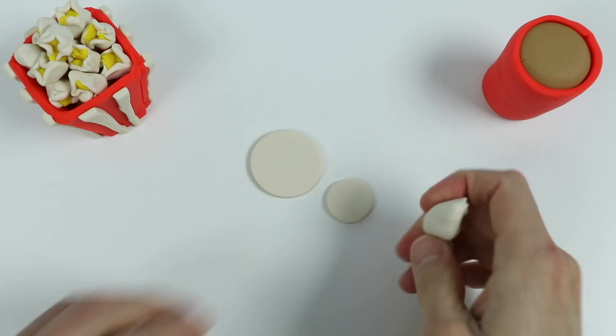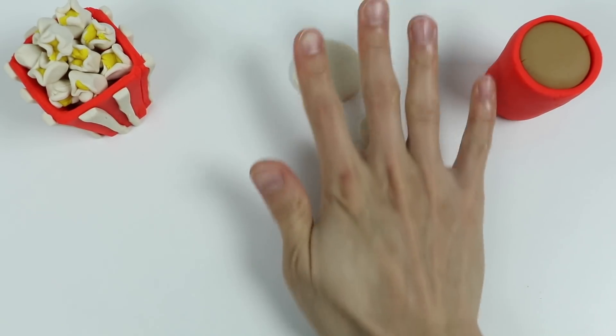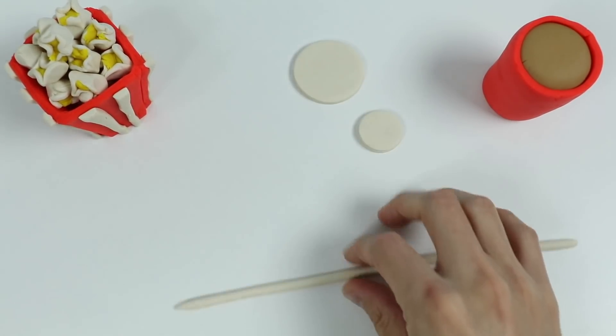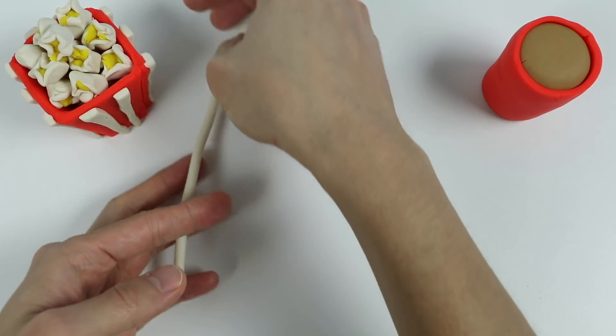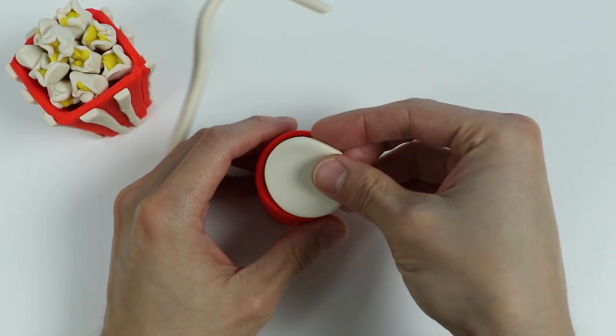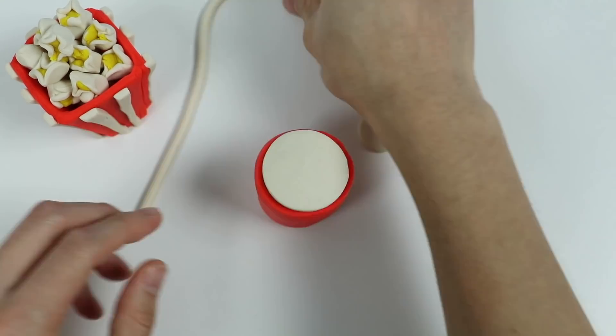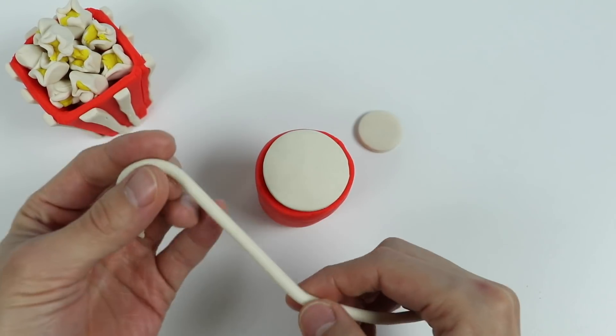We'll also use this as well. Roll it out. Make a noodle-like shape. Perfect! Let's set that aside for now and put our lid on. Now let's use the noodle shape to make the outer lid.